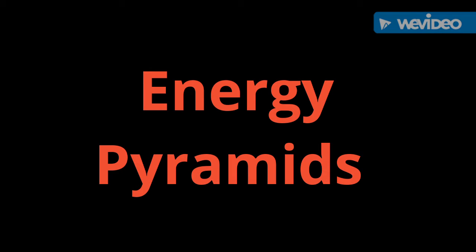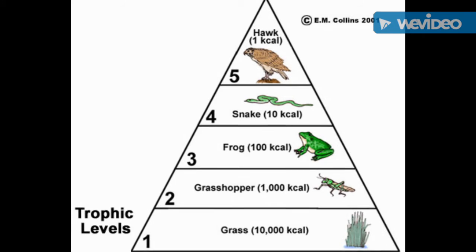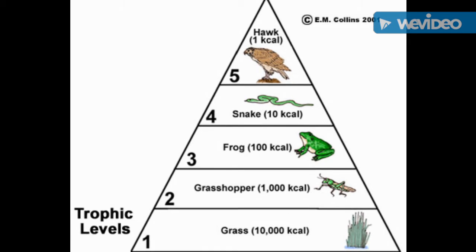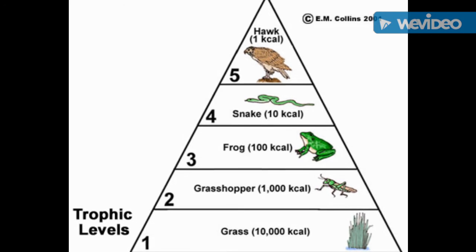Energy flow in the wild is pretty straightforward, with an organism consuming the one below it on the food chain. But how do we model this energy flow effectively?